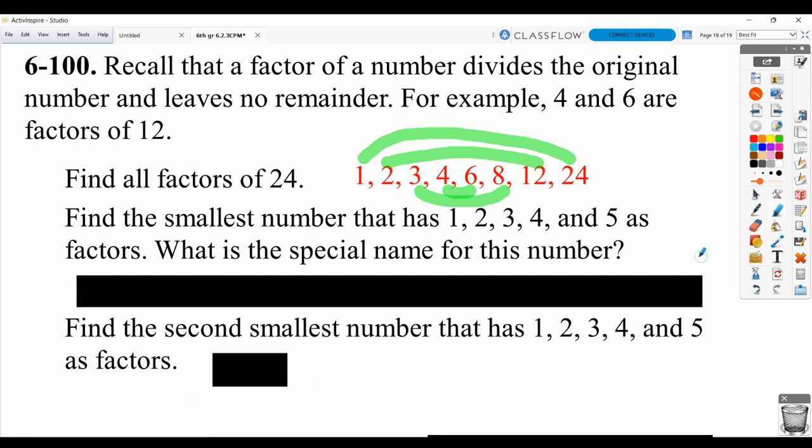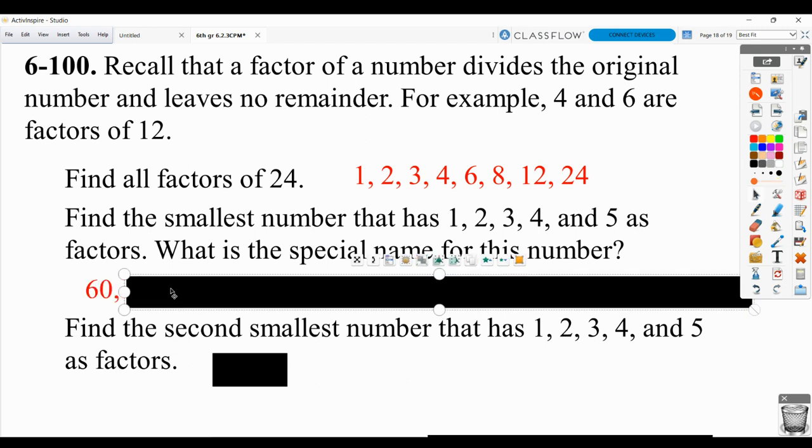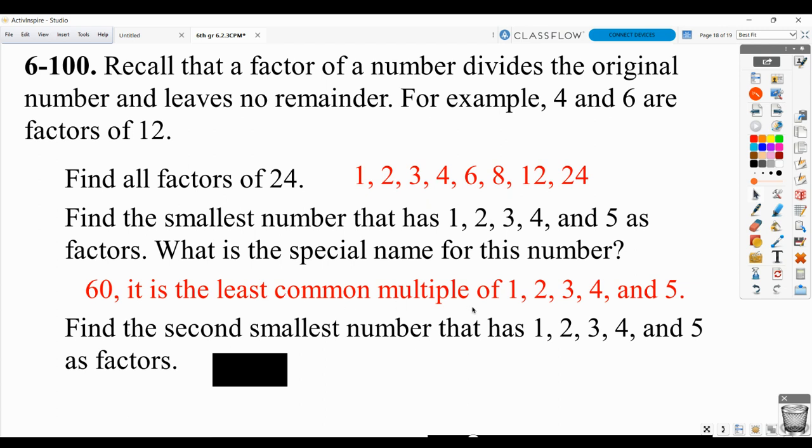Then, they want the smallest number that has 1, 2, 3, 4, and 5 as a factor. And that answer is 60. 60 is the smallest number that will divide by 1, by 2, by 3, by 4, and by 5. And, we call that, of course, the least common multiple. Specifically, the least common multiple of those numbers.